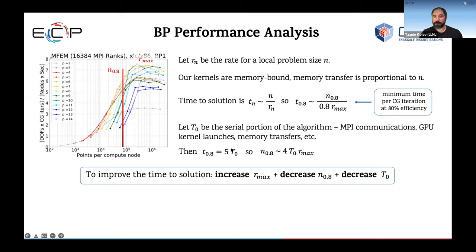In parallel, we're not just interested in maximum performance on one core — we're interested in efficiency when using many cores. We're interested in the problem size where we get about 80 percent of the efficiency. For GPUs, that is correlated with kernel launch times — this is t-zero. This problem size where you get 80 percent efficiency is related to this t-zero and the Rmax. You want to control both: increase Rmax but also decrease the N_0.8 because that's what ultimately controls your runtime.